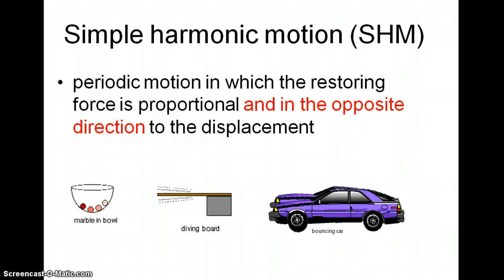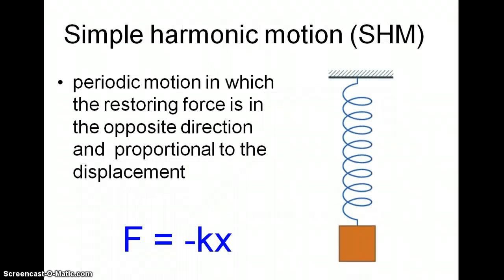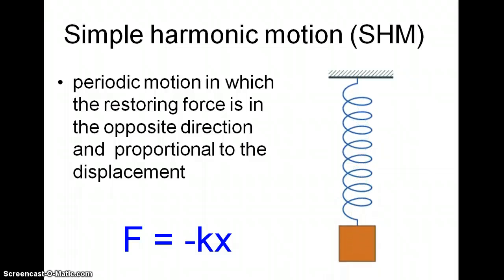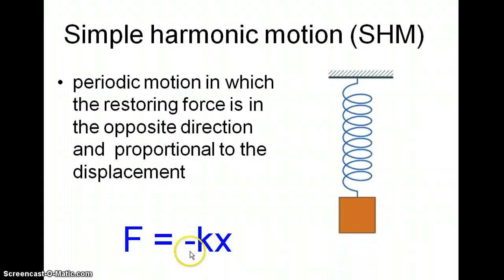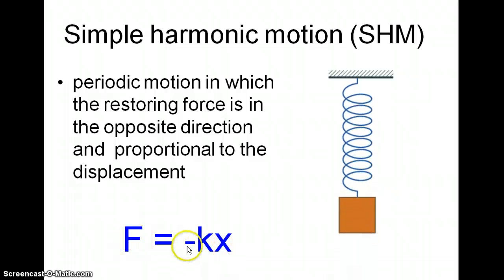Simple harmonic motion is defined — and that means you've got to learn this — as periodic motion in which the restoring force is proportional and in the opposite direction to the displacement. That's why springs oscillate with simple harmonic motion. If you remember Hooke's law, the force of the spring is proportional to the extension — that's x here — but in the opposite direction, that's the significance of the minus sign. When you pull the spring down, the force is in the opposite direction.